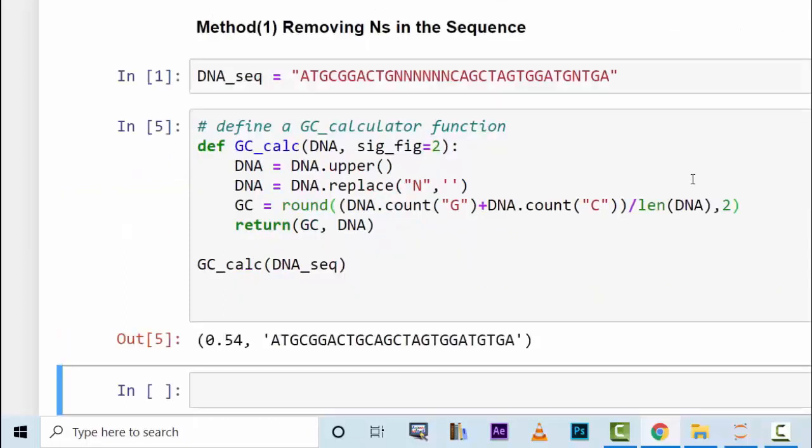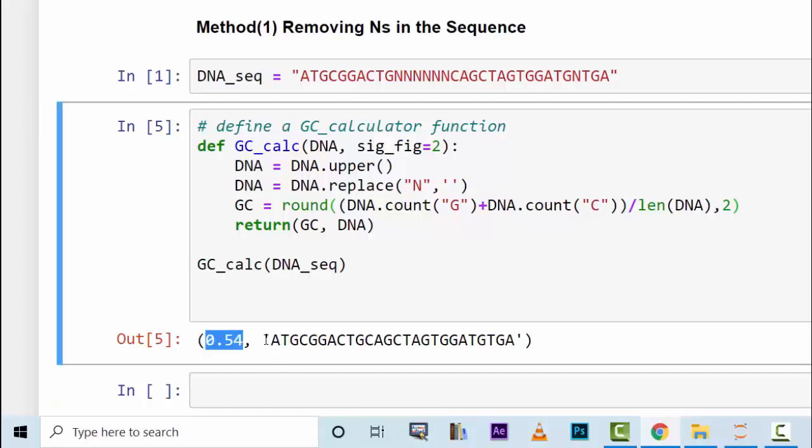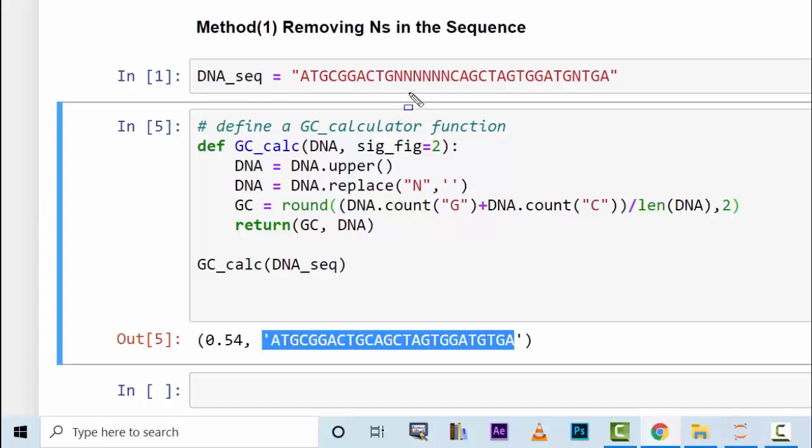Now let's run this. The GC content is 0.54 and this is the DNA sequence. You can notice that this bit here is not found here. And this nucleotide here is also not found here before the T. You can't see them. And the GC content calculation has been done for you. This is one method of doing it and you can do it like that.